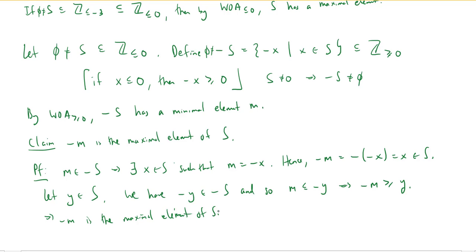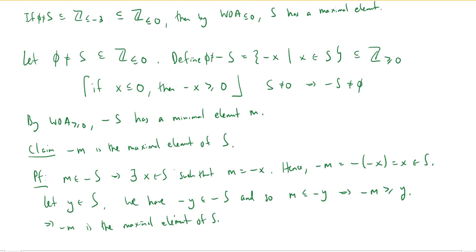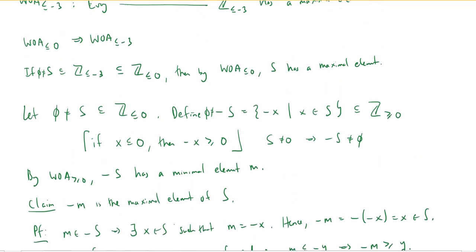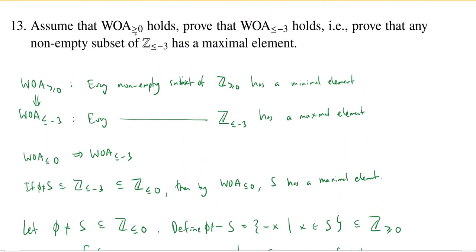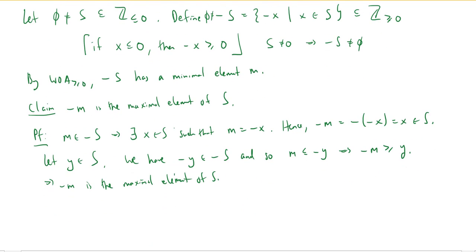And that's exactly what we needed. We assumed the well-ordering axiom for non-negative numbers holds. We showed that proving it for non-positive numbers gives us WOA ≤ -3. To prove it for non-positive numbers, we took a non-empty subset S and showed it has a maximal element — namely -m. The proof is complete.